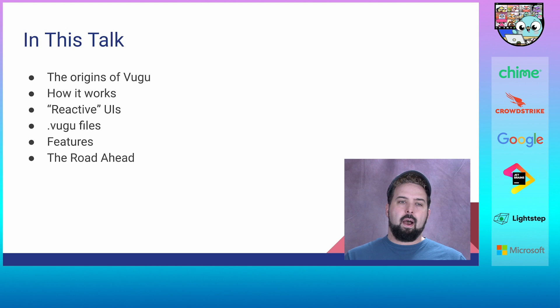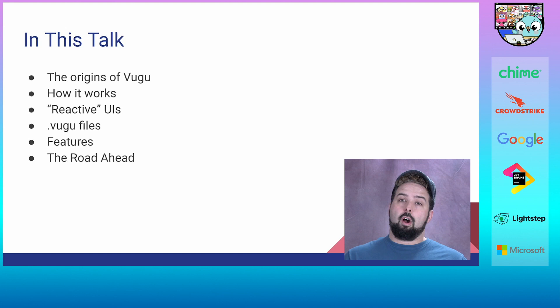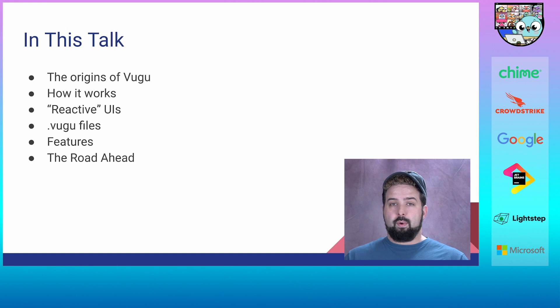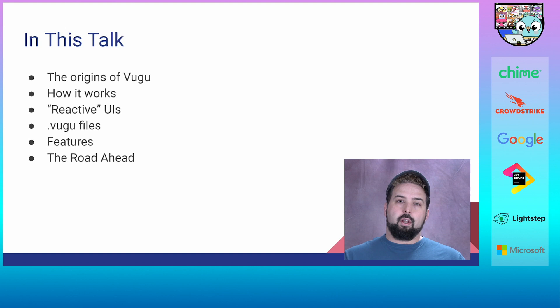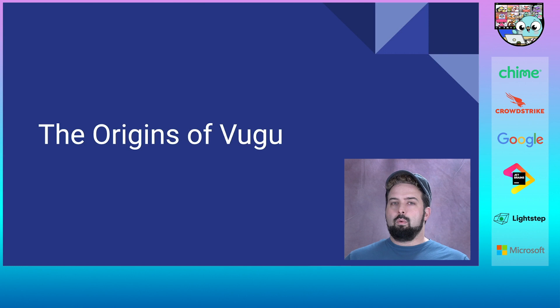In this talk, we'll look at the origins of VUGU. We'll talk about what technology is required for VUGU to function correctly and the background to put VUGU in context and look at the design decisions involved. We'll also talk about how VUGU works — the tool chain from what you type as a developer to what ends up running in the browser. We'll look at reactive UIs, VUGU files, do an example, and then discuss VUGU's features and the road ahead.